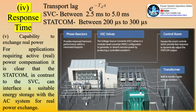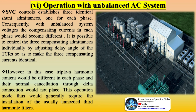The operation of the STATCOM under unbalanced system conditions is different from that of the SVC, but the consequences of such operation are similar. The STATCOM operation is governed by the fundamental physical law requiring that the net instantaneous power at the AC and DC terminals of the voltage-sourced converters employed must always be equal. This is because the converter has no internal energy storage, and thus energy transfer through it is absolutely direct; consequently the net instantaneous power at the AC and DC terminals must be equal.